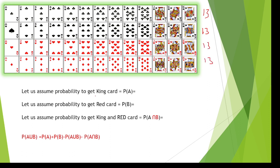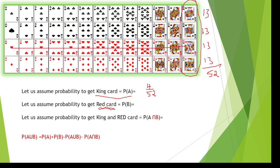Probability to get a king card: there are four kings, so four favorable outcomes out of 52 total cards — that is 4 by 52. Probability to get a red card: hearts have 13 red cards and diamonds have 13 red cards, so 13 plus 13 equals 26 red cards out of 52 — that is 26 by 52.